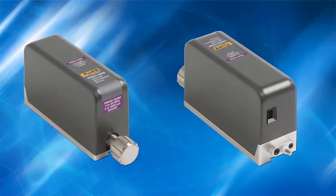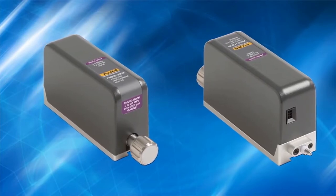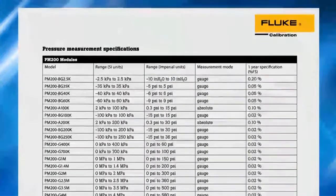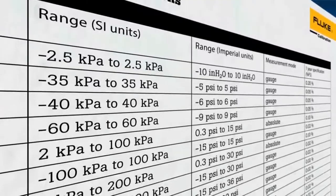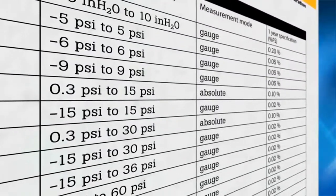The 2271A uses Fluke Calibration PM200 modules to measure pressure. With over 20 ranges to choose from, you can use the 2271A from vacuum to 20 MPa, or 3000 PSI.